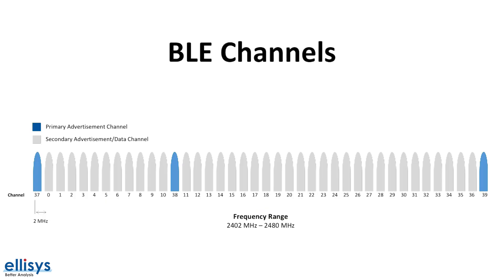In BLE there are 40 RF channels utilized by the radio, ranging from 2402 MHz to 2480 MHz, with channels separated by 2 MHz center to center. Three of them are used exclusively for advertisements — these are called the primary advertisement channels and are highlighted in blue in this diagram. These are channels 37, 38, and 39. The remaining 37 channels, labeled 0 to 36, are used for data transfer during a connection, but they're also used for secondary advertisements which were introduced in Bluetooth 5.